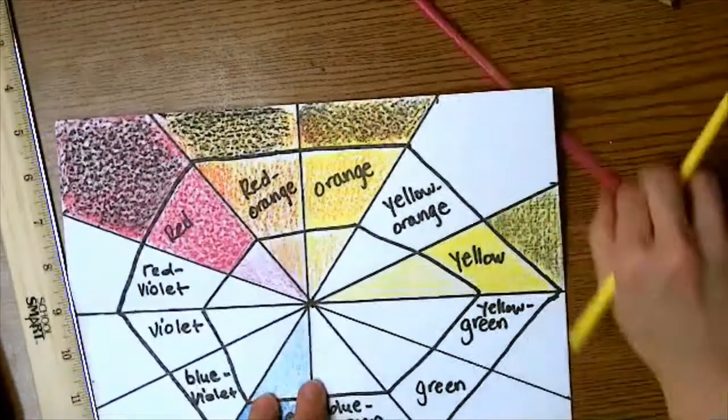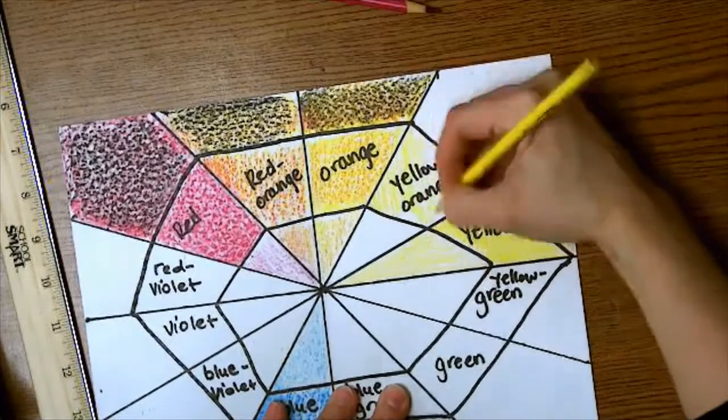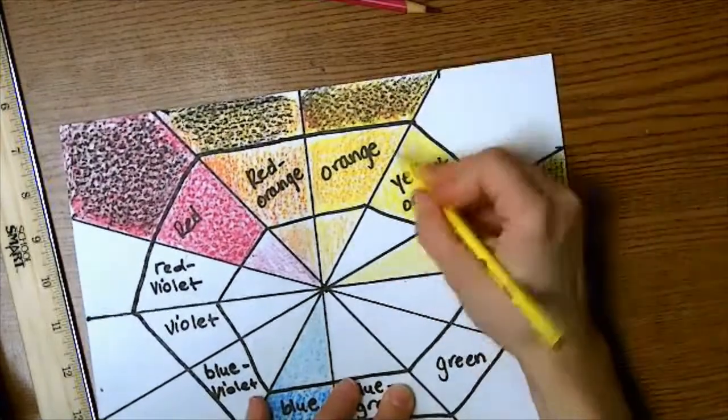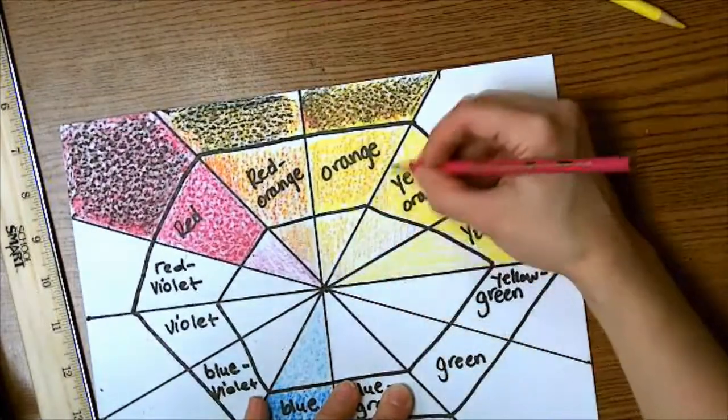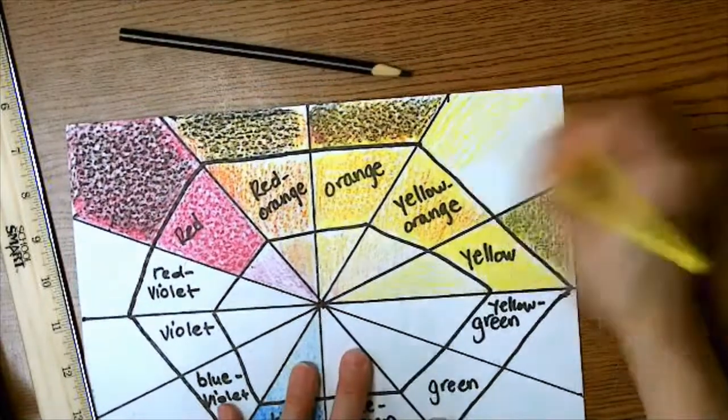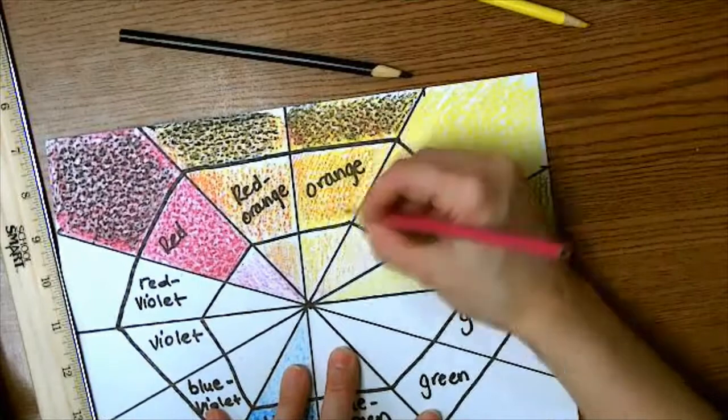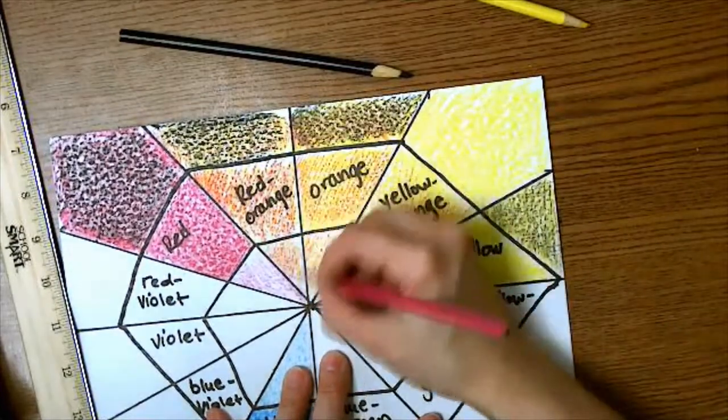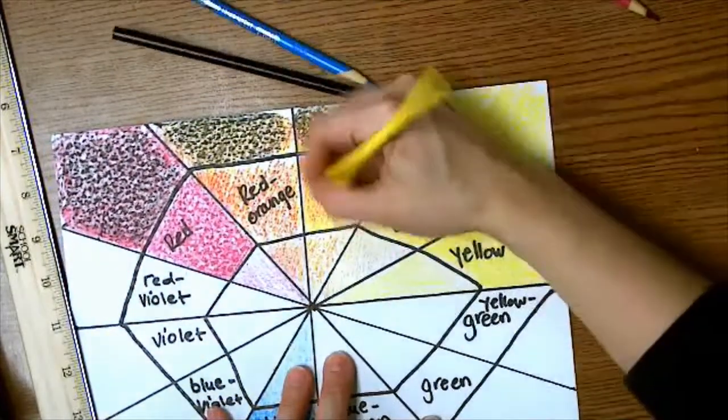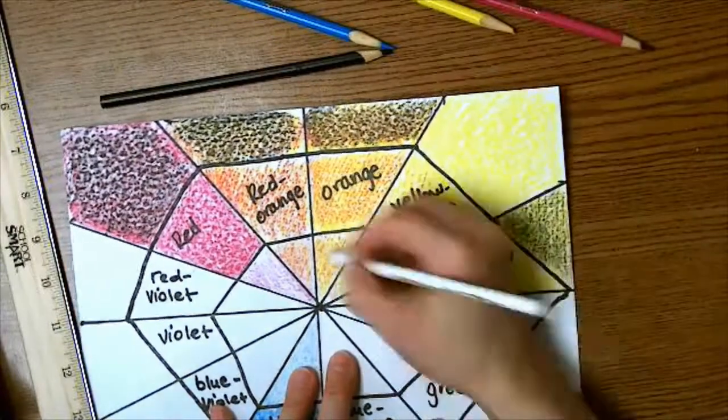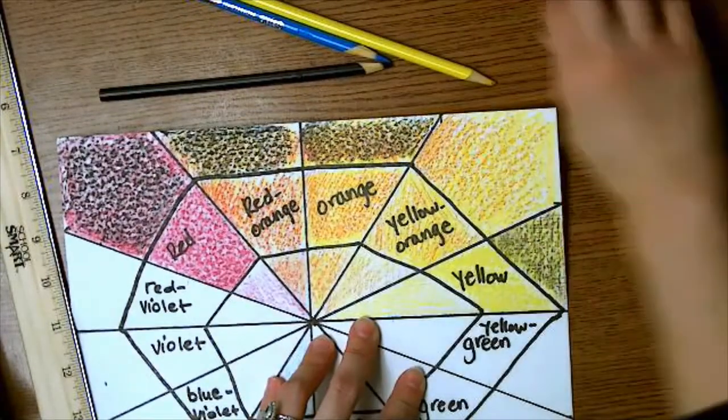I'm going to make sure that red orange has more magenta in it than orange, and that orange has more magenta in it than yellow orange. And I want to make sure each shade section gets the same amount of black and each tint section gets the same amount of white, so that in the end my color wheel will look nice and even.